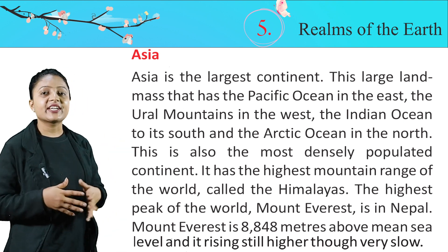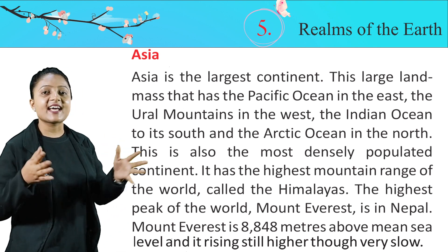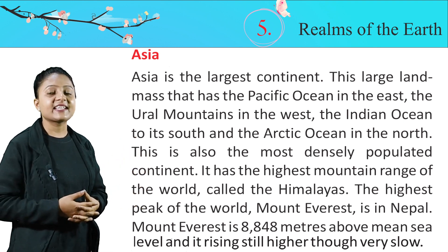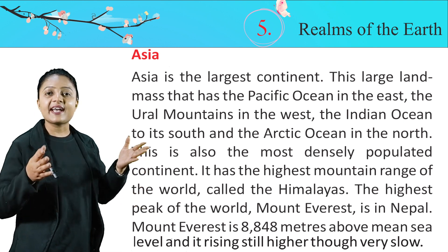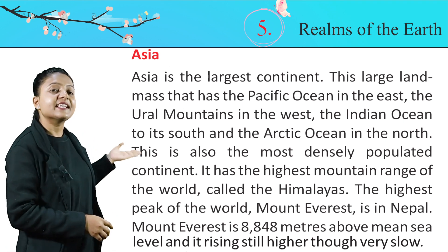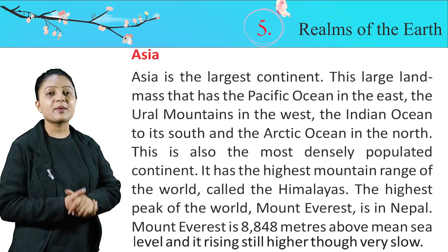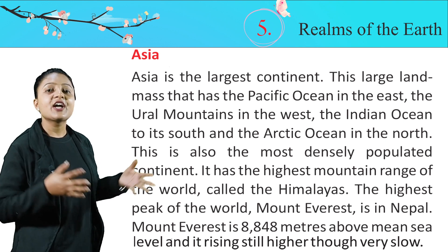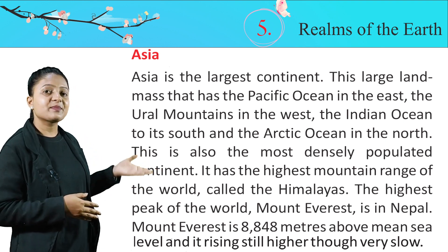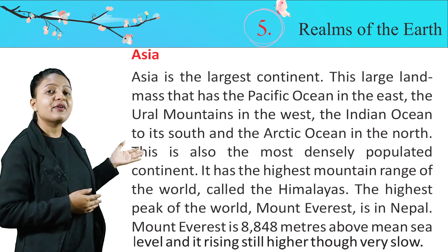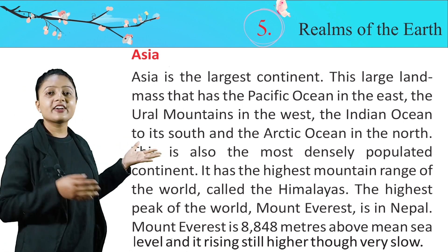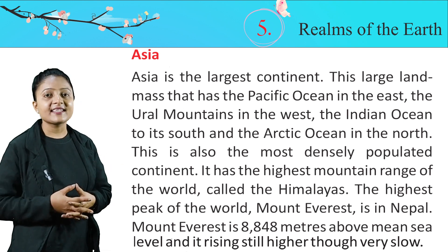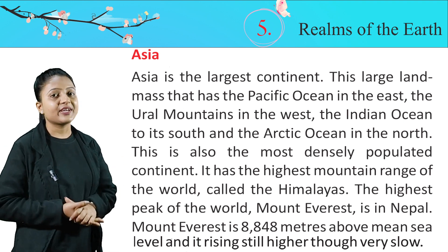Asia. Asia is the largest continent. This large land mass has the Pacific Ocean in the east, the Ural Mountains in the west, the Indian Ocean to its south, and the Arctic Ocean in the north. This is also the most densely populated continent. It has the highest mountain range of the world called the Himalayas. The highest peak of the world, Mount Everest, is in Nepal — 8,848 meters above the mean sea level. And it is rising still higher, though very slowly.